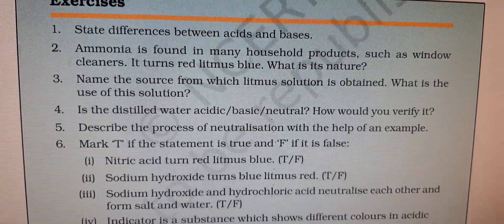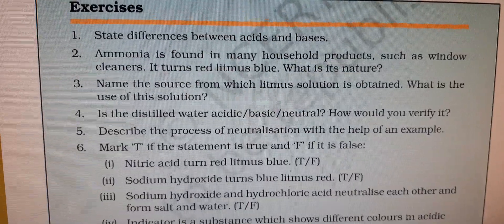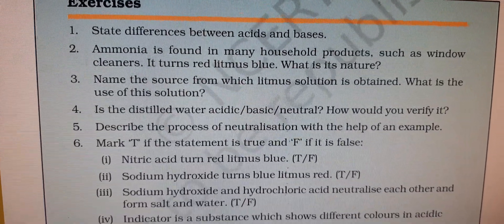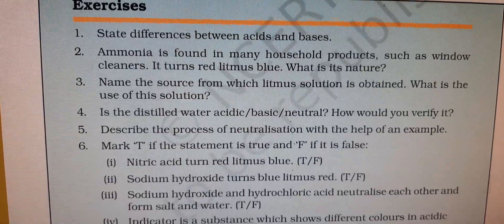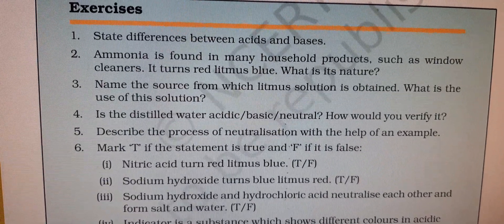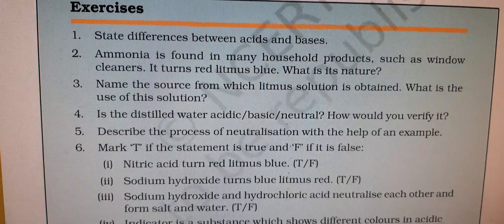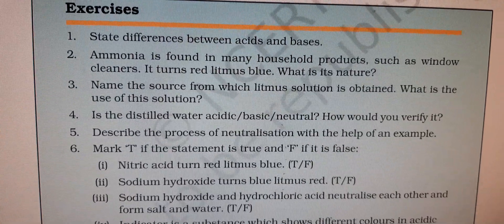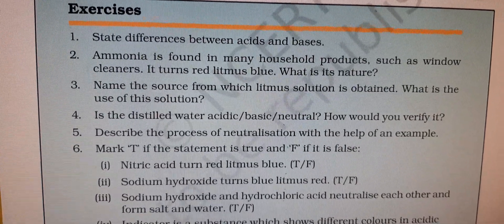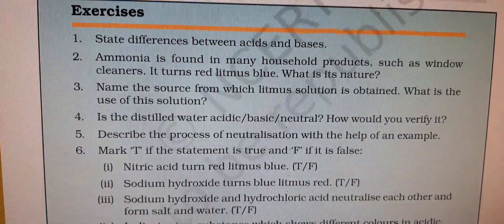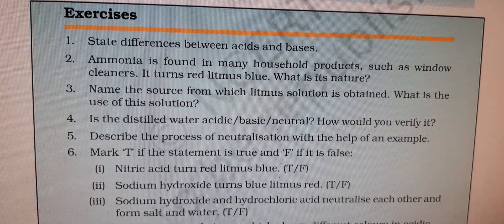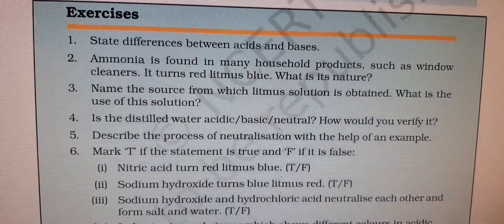Question 1: State the difference between acid and bases. This was discussed in the previous videos. You have to write the difference between acids and bases — minimum 5 to 6 points. Differences should always be written in column format.